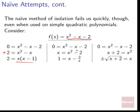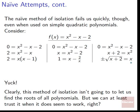We might try another approach: divide by x to get 1 = x - 2/x — still stuck. Or move everything but x² to one side: x + 2 = x², take the square root, and get ±√(x + 2) = x. In all three of these attempts, it's really hard to figure out what to do next. This method of isolation won't work here because we can't get x alone on one side.